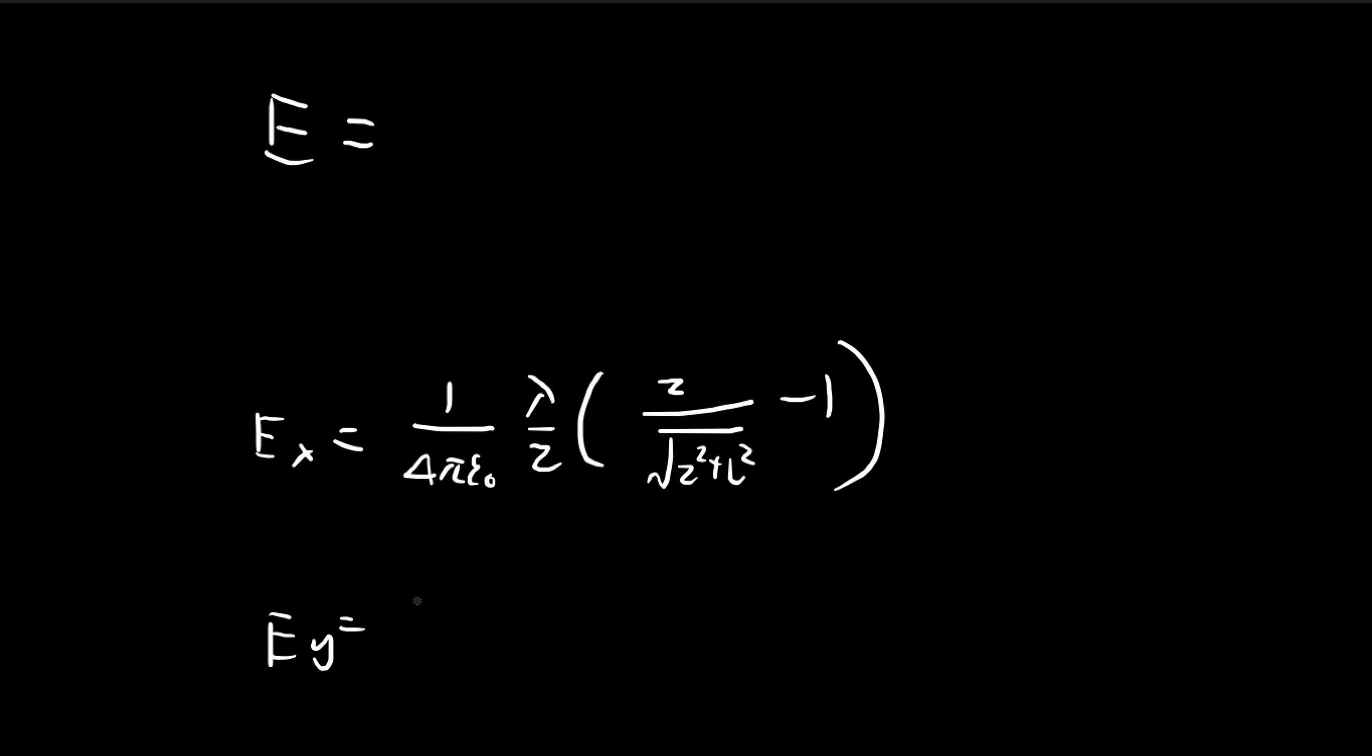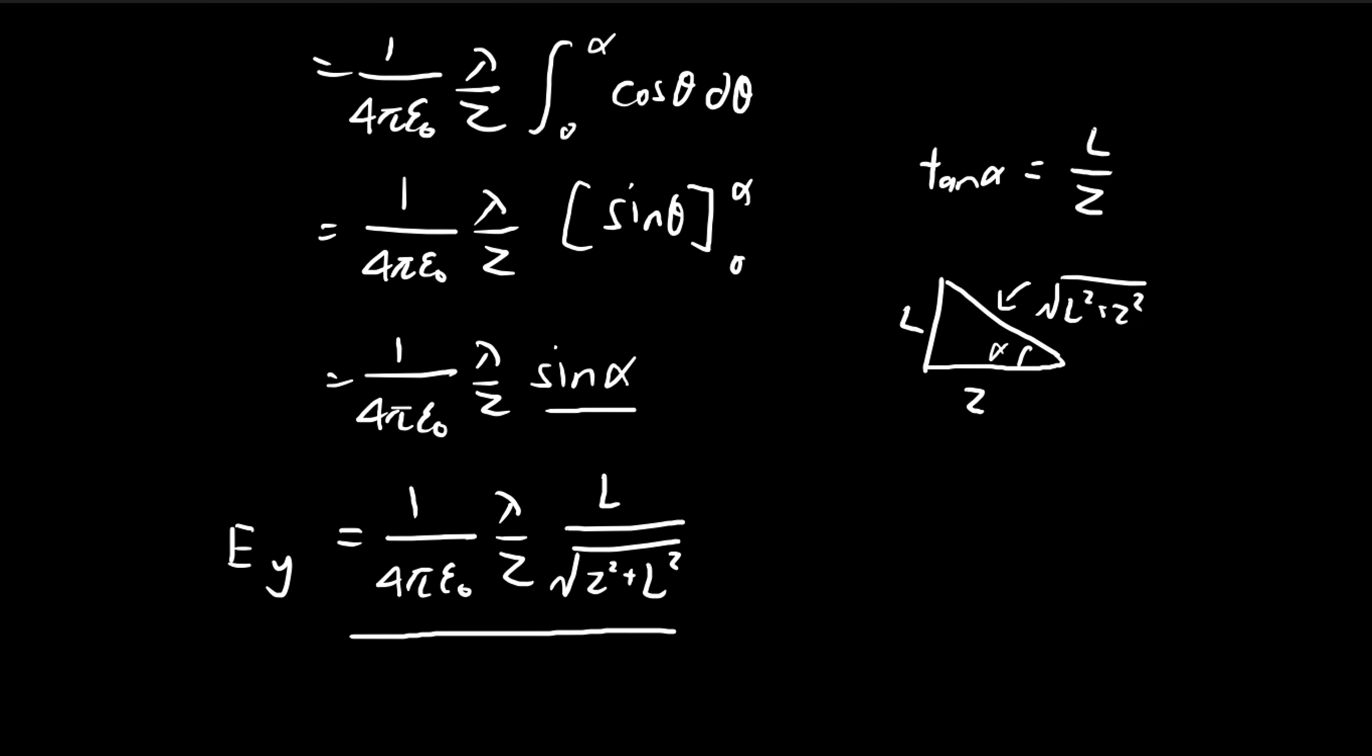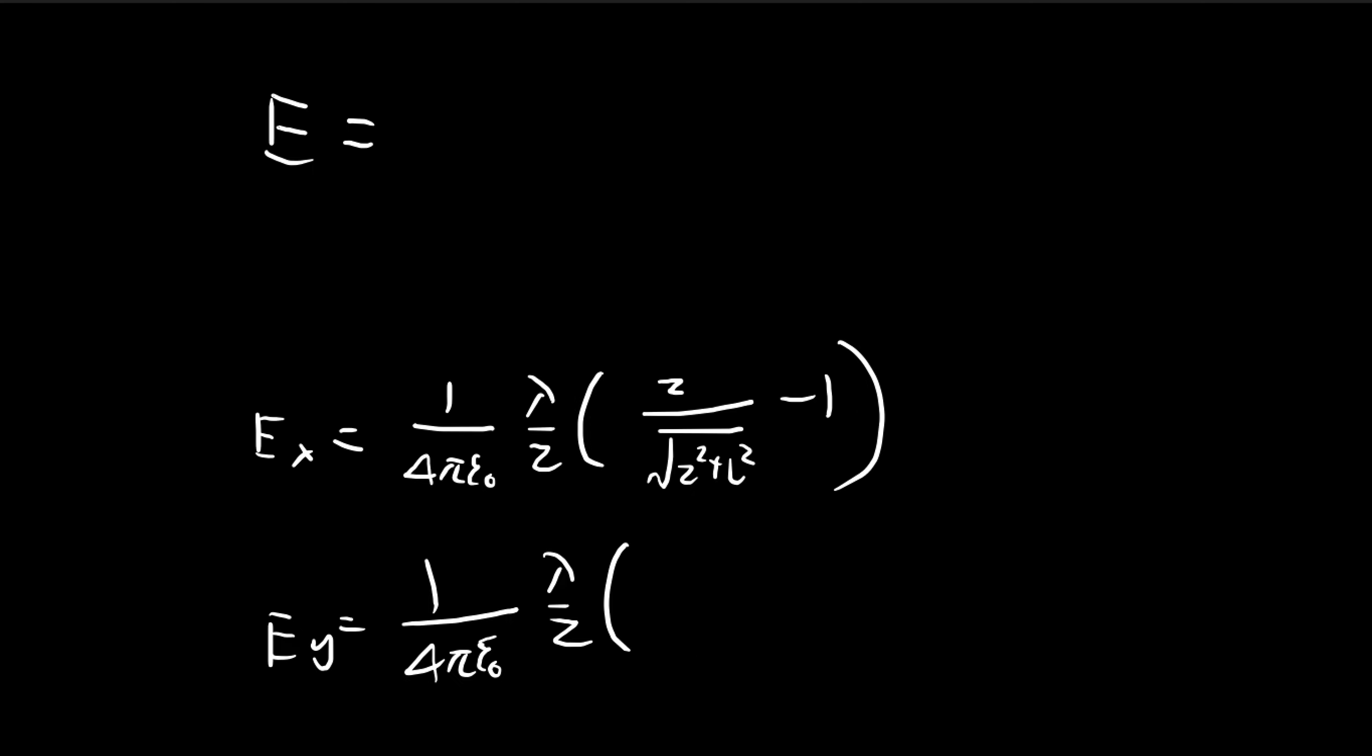And then for the y direction, we have something that looks fairly similar. So for the y direction, it's going to look something like this: L divided by z squared plus L squared.